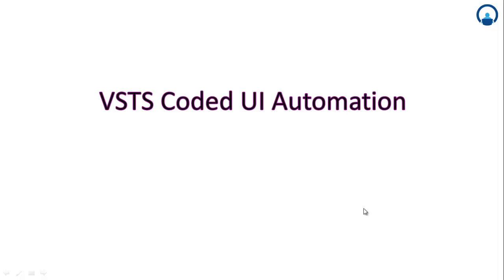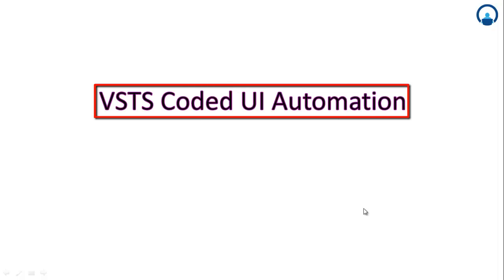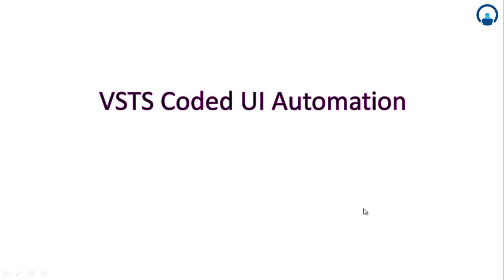This session is about automation testing and we'll be learning a new automation tool. This is a Microsoft tool and it is also called as VSTS Coded UI Automation Tool. VSTS stands for Visual Studio Team System, and Coded UI is the type of test that gets created for this tool. You can also call it the Coded UI Automation Tool.